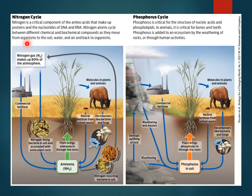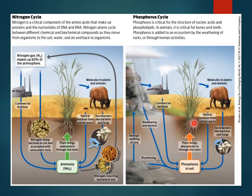Phosphorus is really critical for the structure of nucleic acids and phospholipids, which go into cell membranes, and in animals it's needed for bones and teeth. Phosphorus is added to the ecosystem mostly by weathering rocks or through human activities. Phosphorus enters the soil through the weathering of rocks; plants take it up through their roots; animals eat these plants and obtain phosphorus in turn. When plants and animals die, phosphorus is returned to the soil, completing the phosphorus cycle.